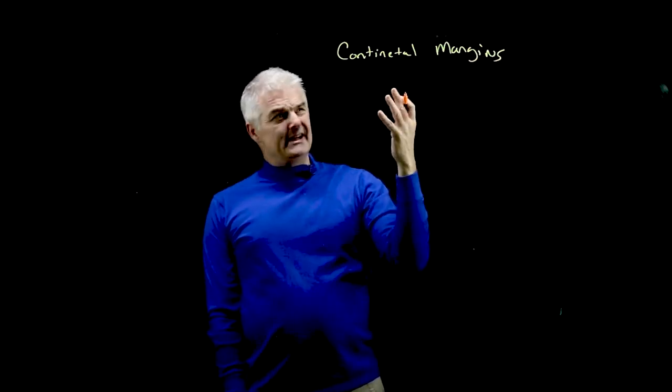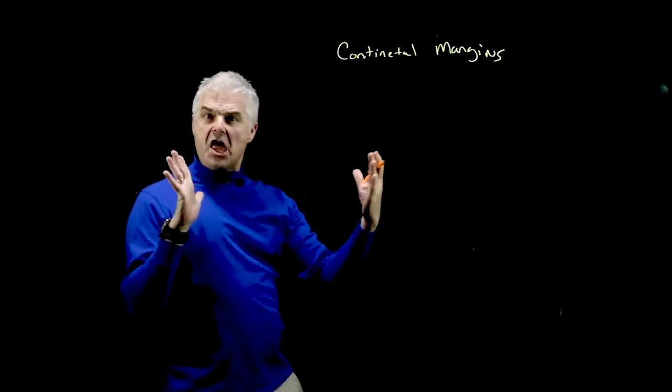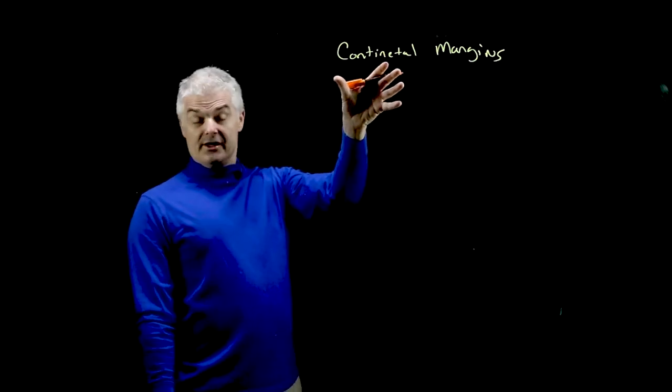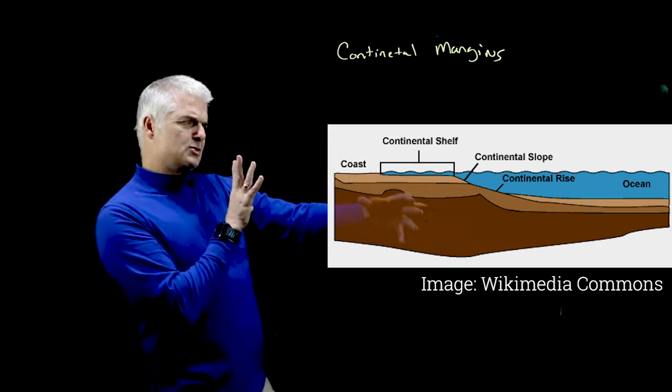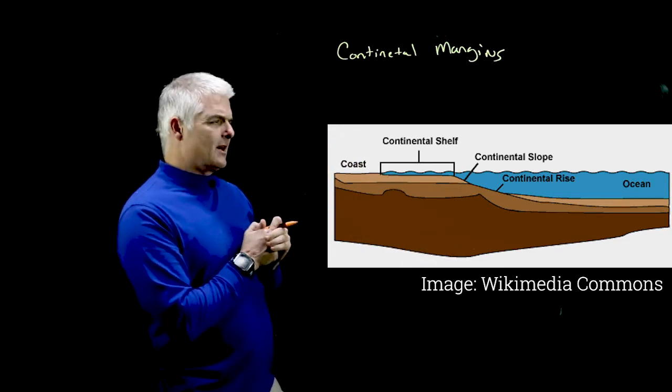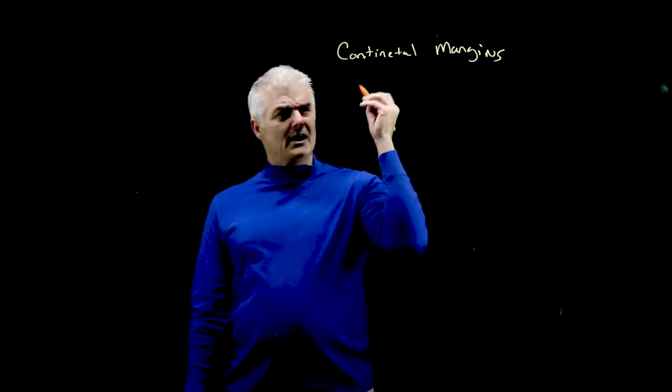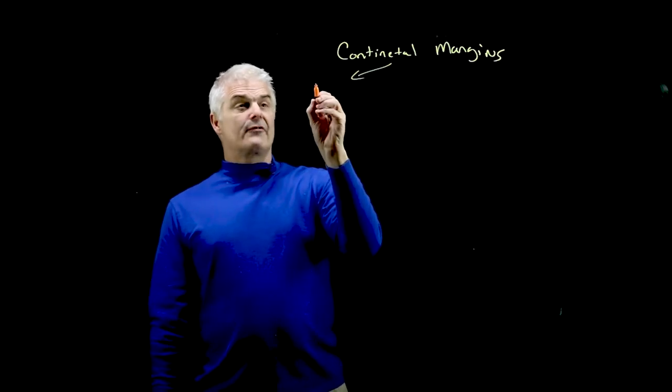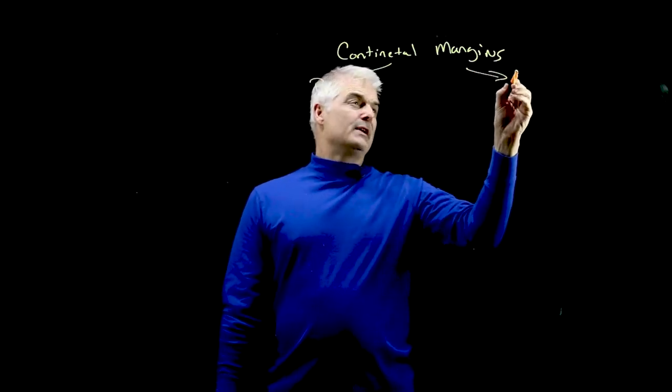So what's a continental margin? Well, you know what a margin is, right? The margin of a piece of paper. It's the edge. So the edge, the margin, of the continent. Take a look at the picture here. So pretty cool. You can see interesting features in the image of the continental margin, and we want to talk about what they are. Now, it turns out, when we talk about the continental margins, there's two types of continental margins. The first one is called passive, and the second one is called active.